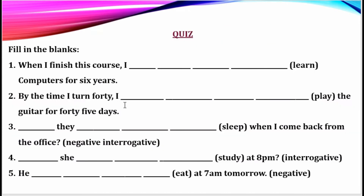This is a very simple quiz — you have to fill in the blanks. First: 'When I finish this course, I [will have been learning] computers for six years.' Second: 'By the time I turn 40, I [will have been playing] the guitar for 45 days.'